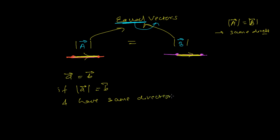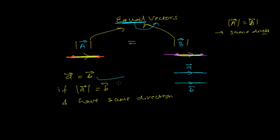There are many ways to represent this. You may displace one vector to another position, but you should not alter the size — you should not alter the length of the vectors. Let's say this is vector A, and of the same size, in the same direction, I have vector B. This length is the same and the direction is also the same, so I can say vector A is equal to vector B.